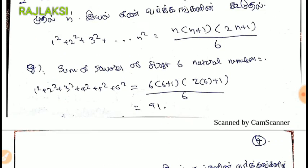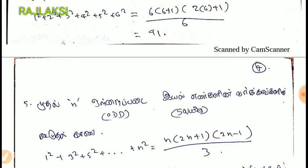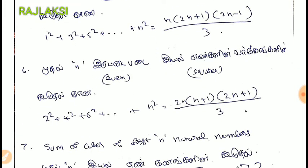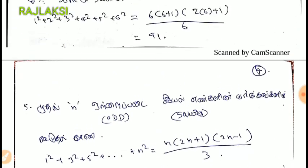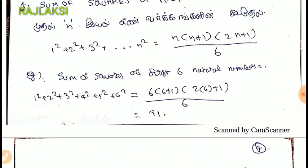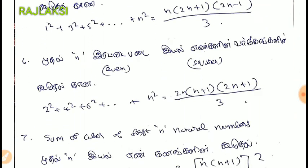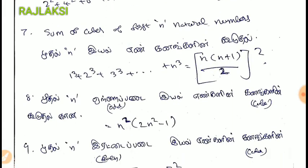We can find N into N plus 1, then 2N plus 1, and we will divide by 3. That is about the sum of odd squares. All the numbers are the same. That means we have to use even numbers. So N into N plus 1 into 2N plus 1 will be divided by 6, and 2N plus 1 divided by 3 — you will cut 6.